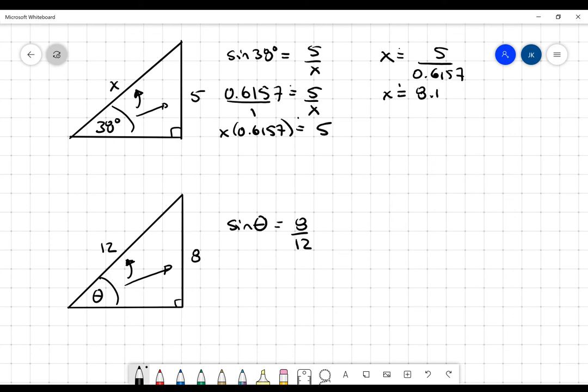So on my calculator, I use the inverse sine button or the second sine button. I enter in that ratio. And then the calculator is going to tell me what the angle is. And it's going to be in this case, approximately 42 degrees.